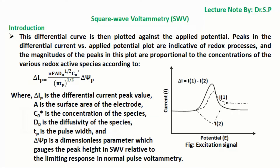The relationship is given by delta IP, according to the equation: delta IP equals n·F·A·D0^(1/2) times the concentration of species, divided by (pi·tP)^(1/2), times delta chi-P. Where delta IP is the differential current peak value, A is the surface area of the electrode, C0* is the concentration of the species, D0 is the diffusivity of the species, tP is the pulse width, and delta chi-P is a dimensionless parameter gauging the peak height in SWV relative to the limiting response in normal pulse voltammetry.